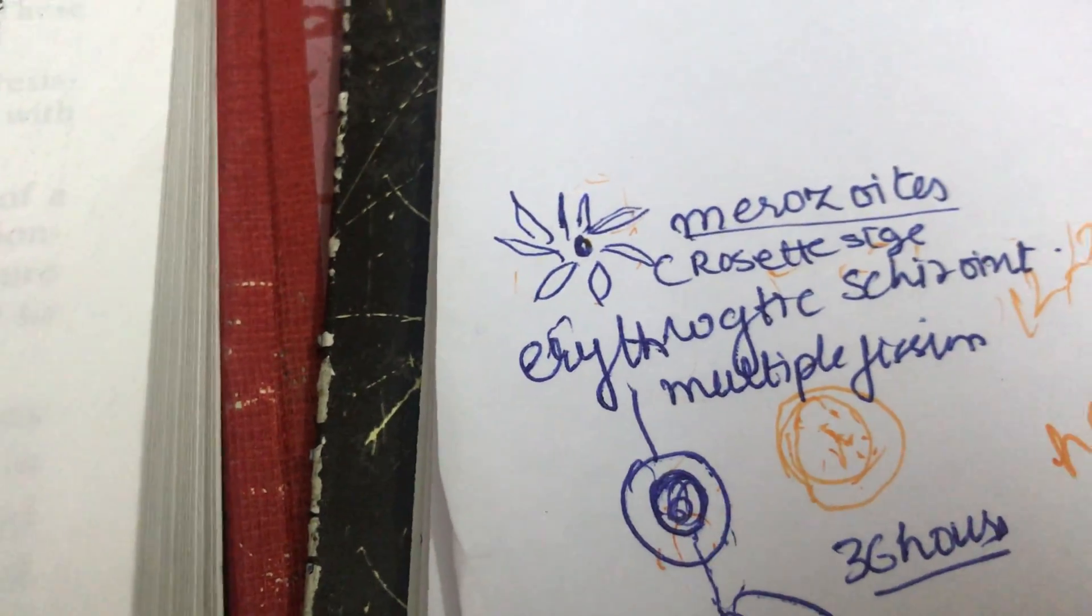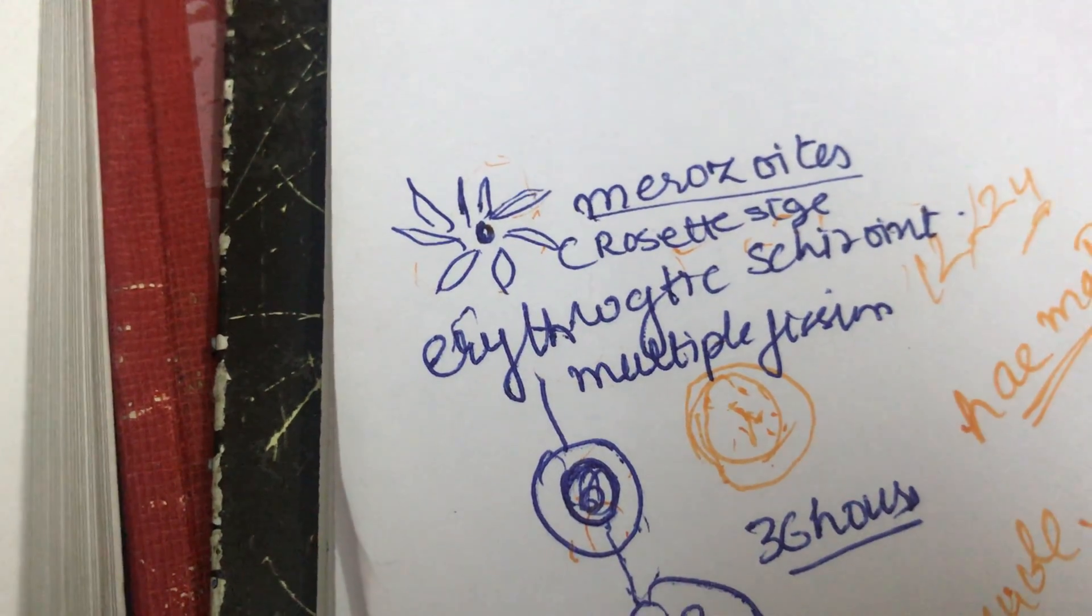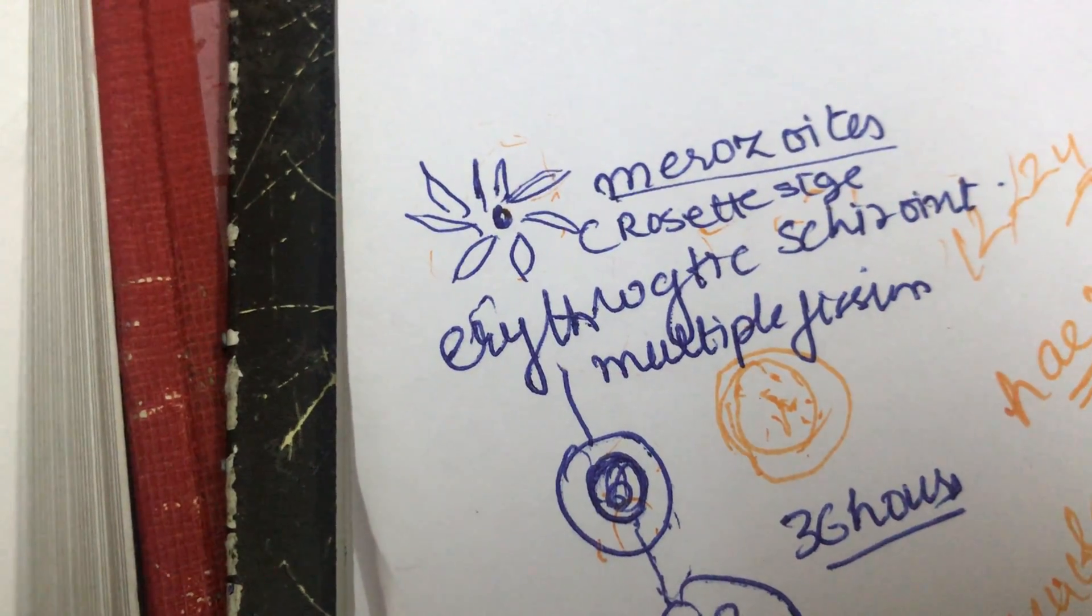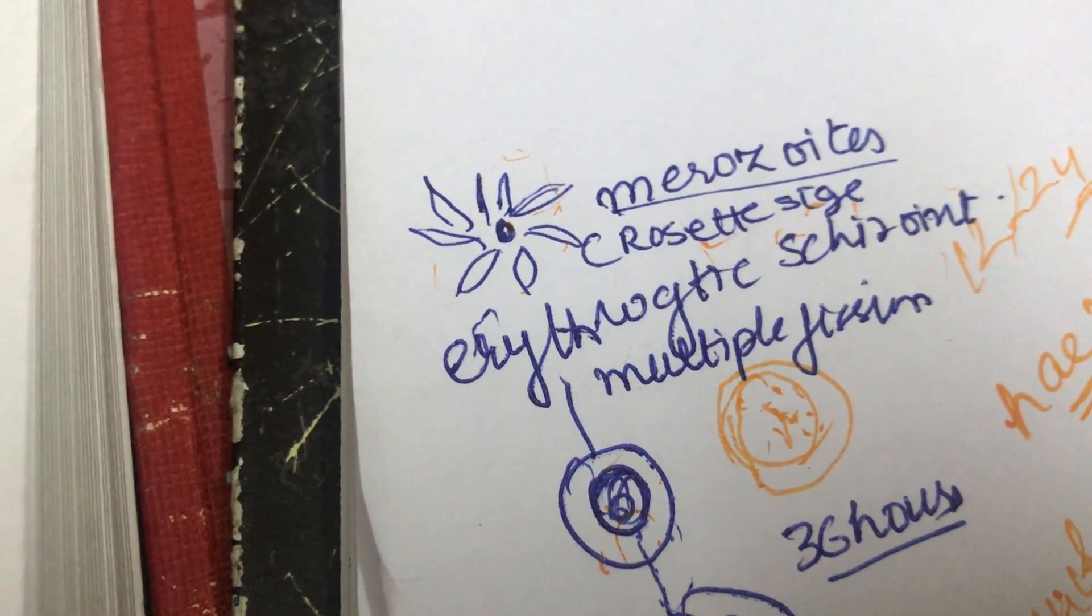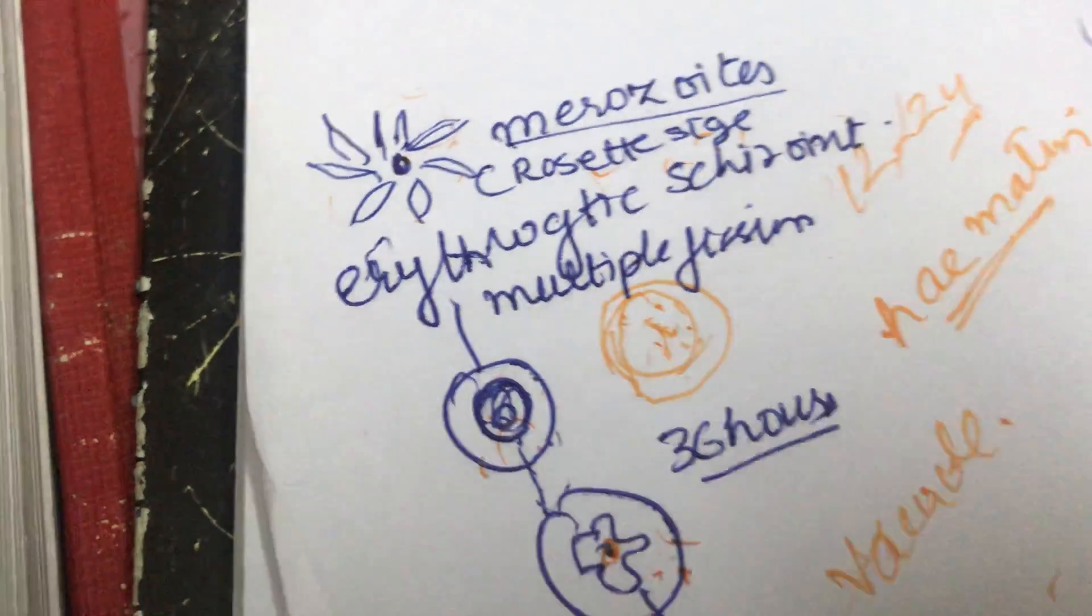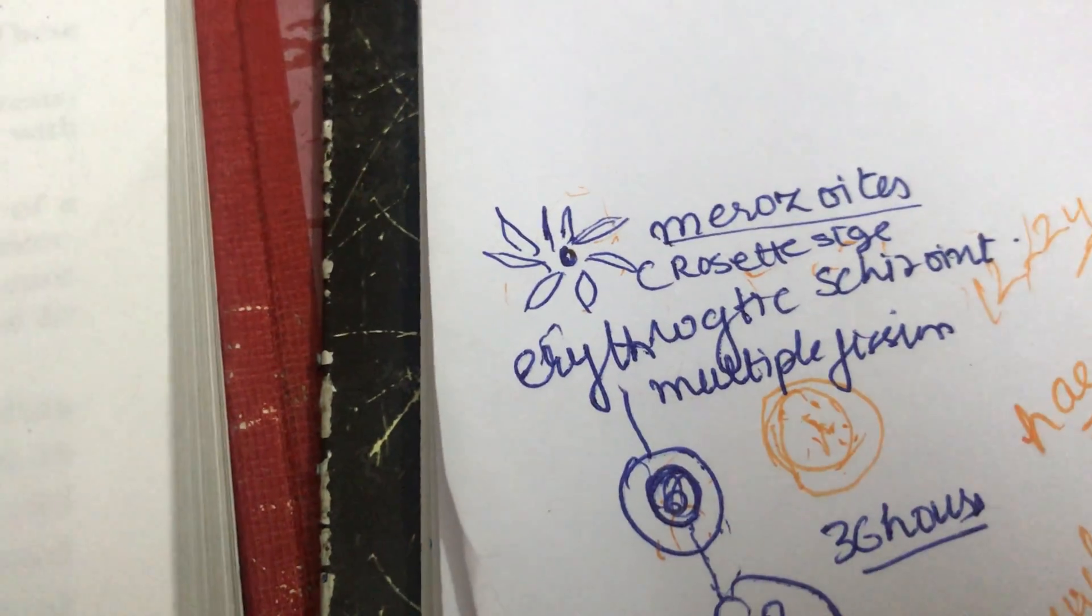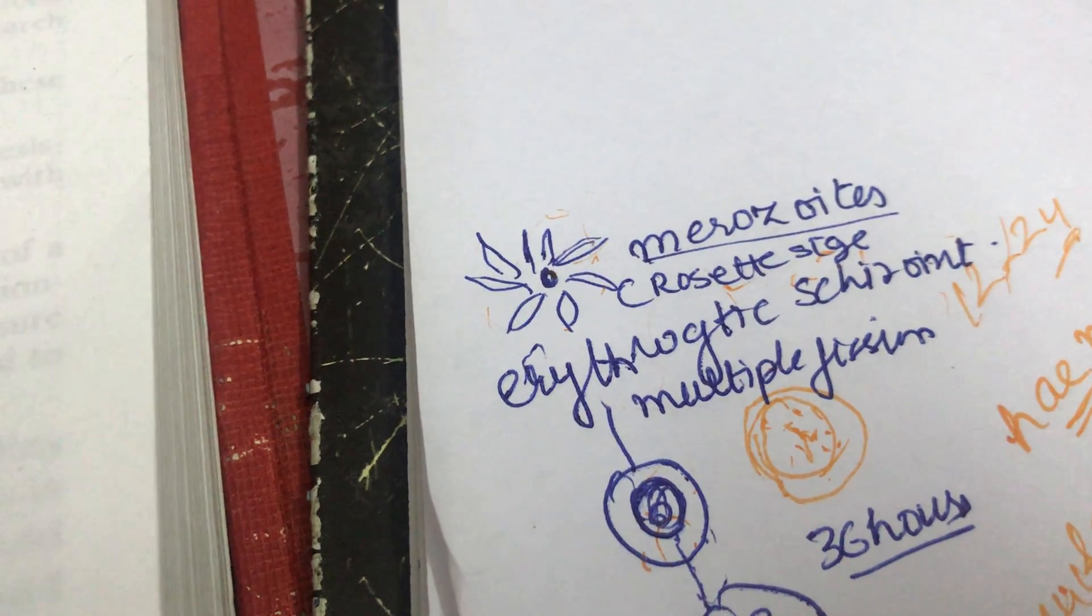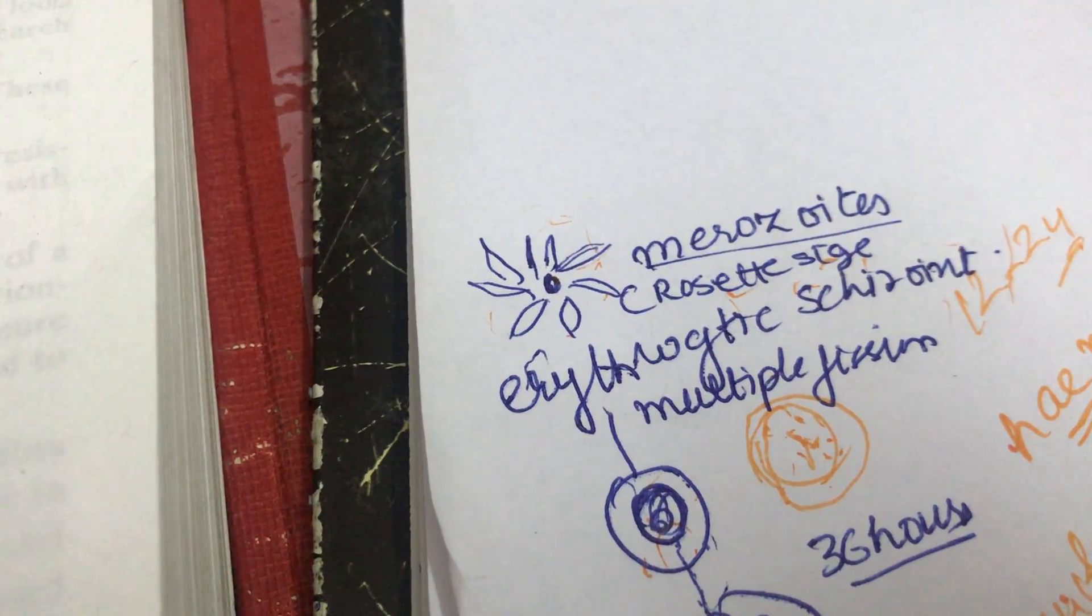About 48 hours after infection, the weakened capsule ruptures. This releases merozoites into the plasma along with residual cytoplasm, hematin, and toxins. These are eaten up by the phagocytes of the spleen and kidney, such as WBCs.